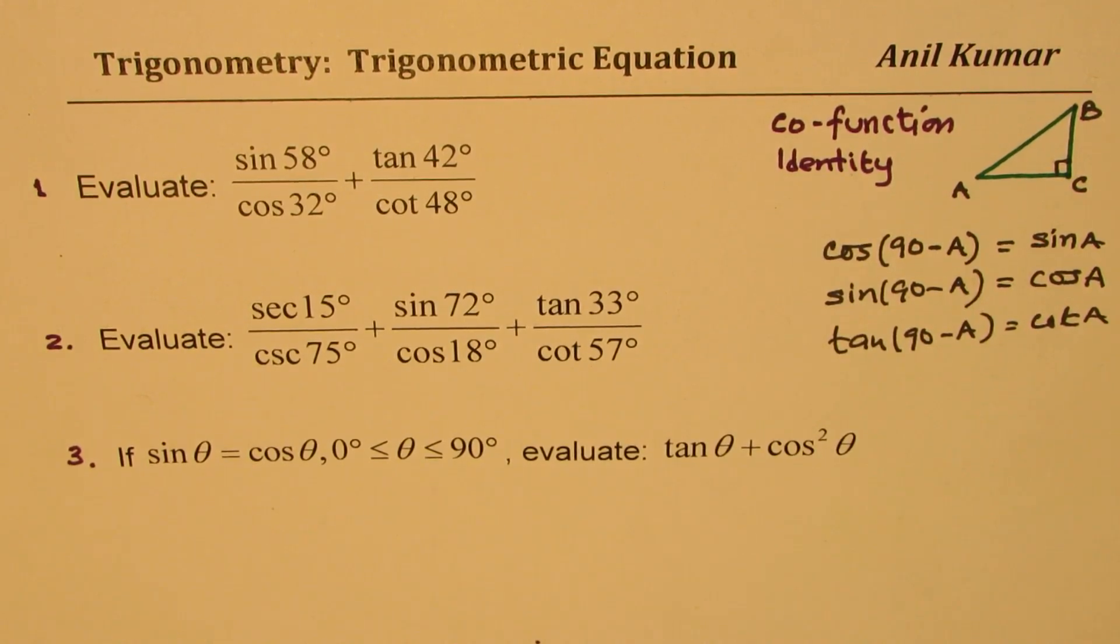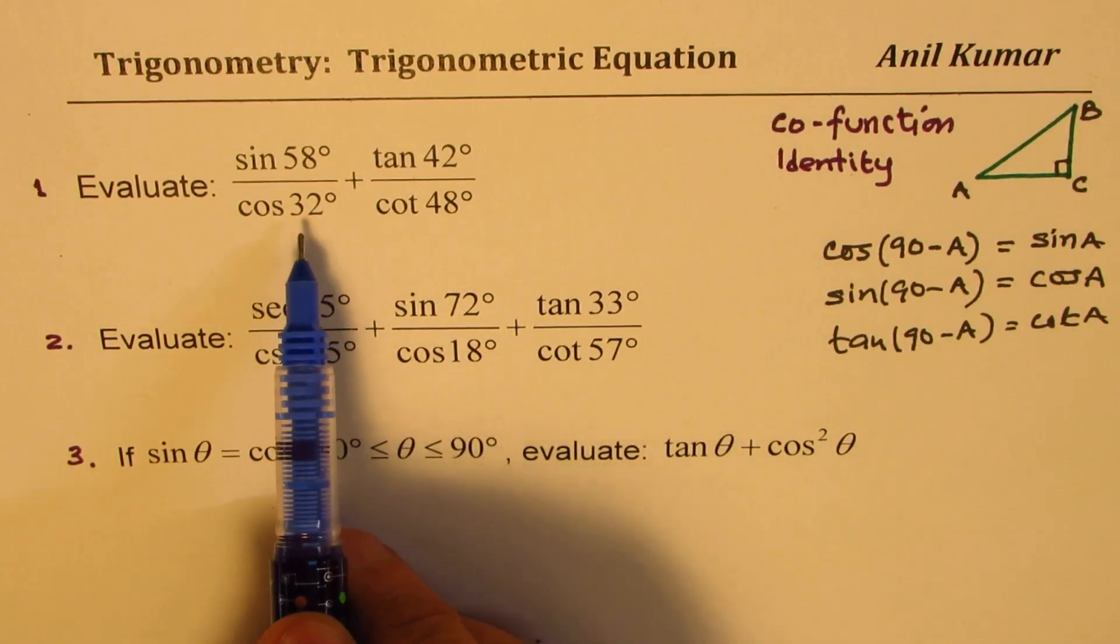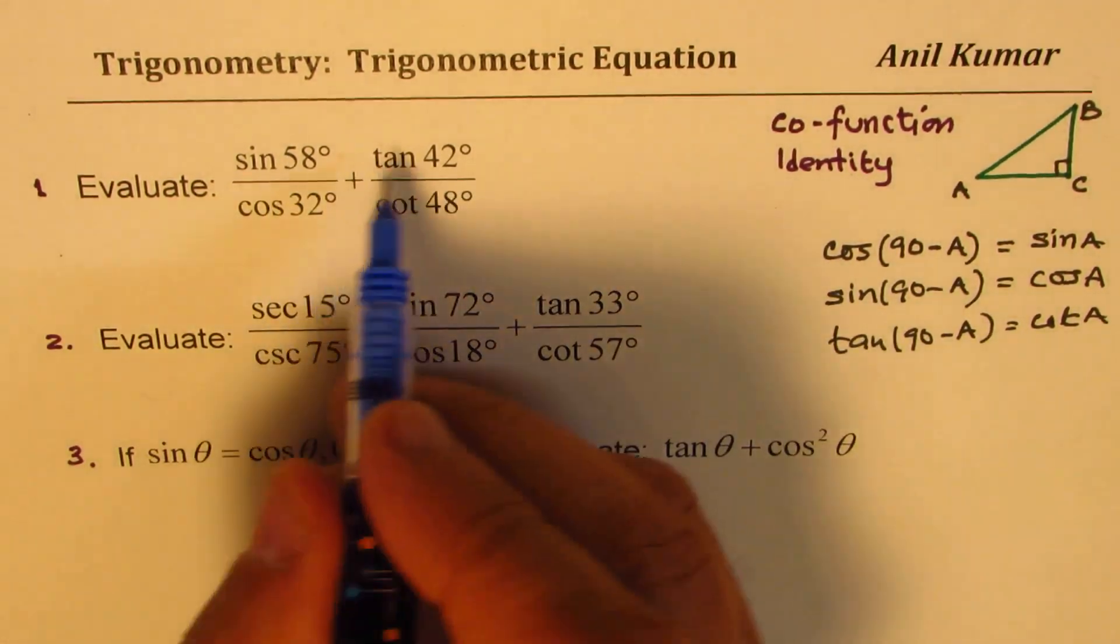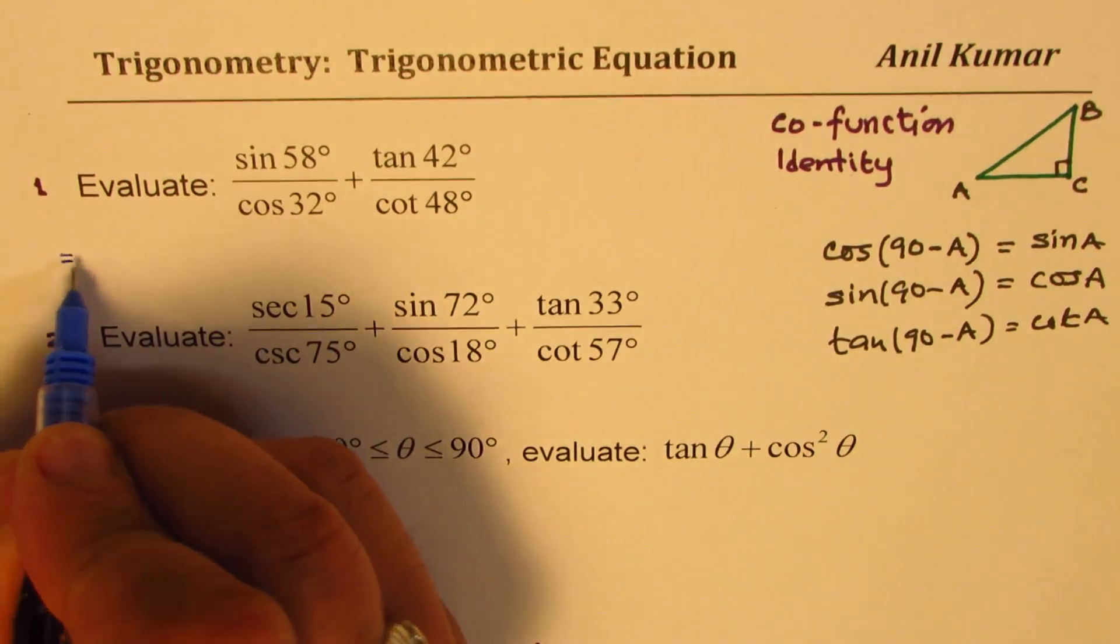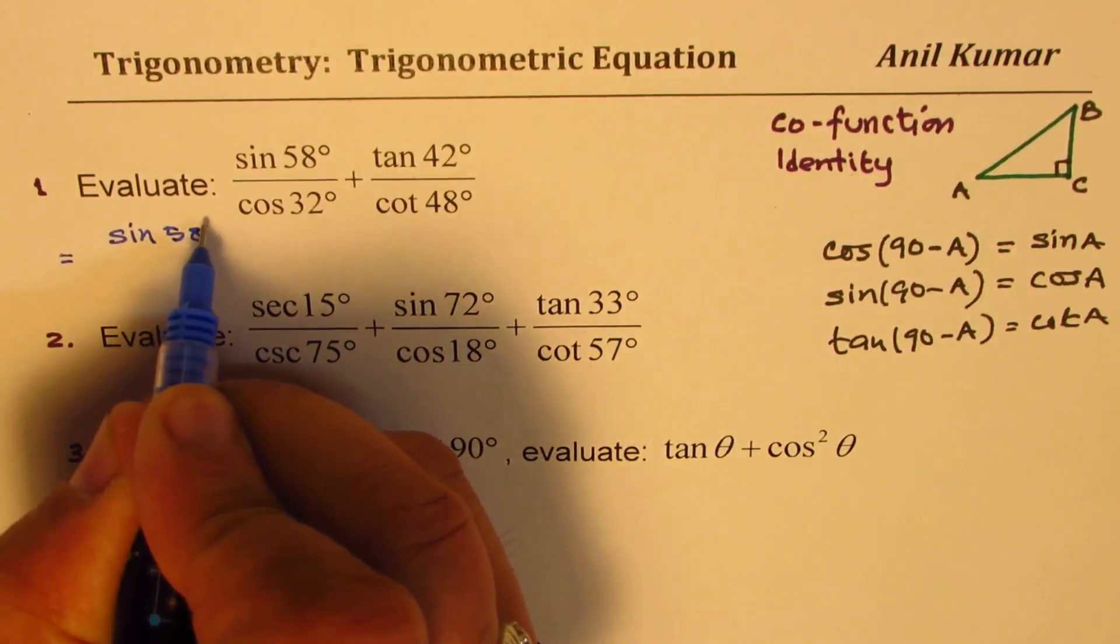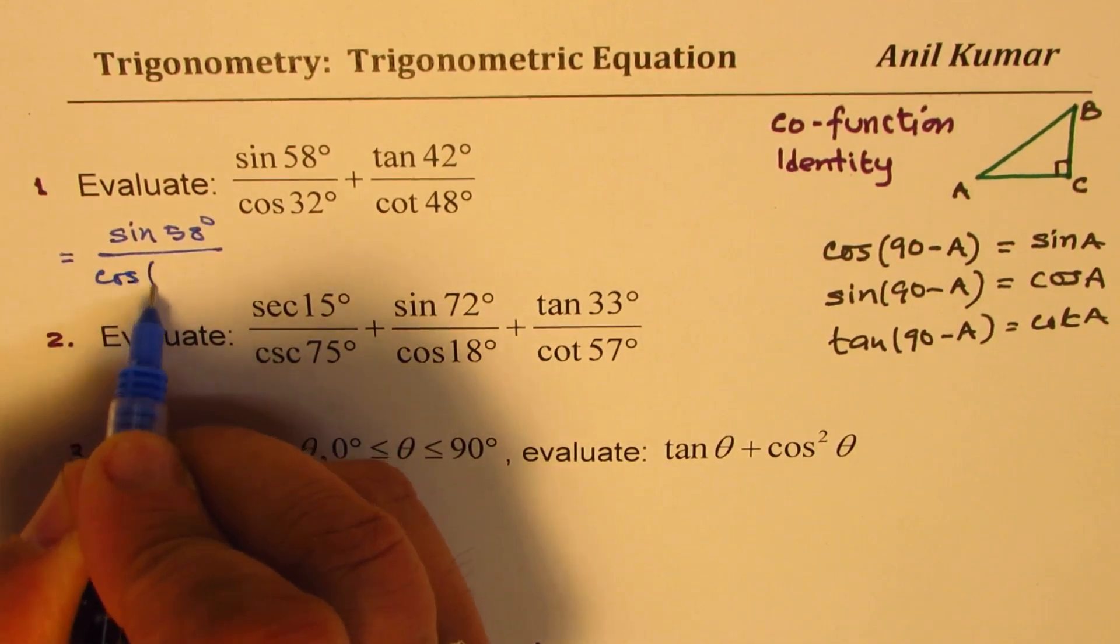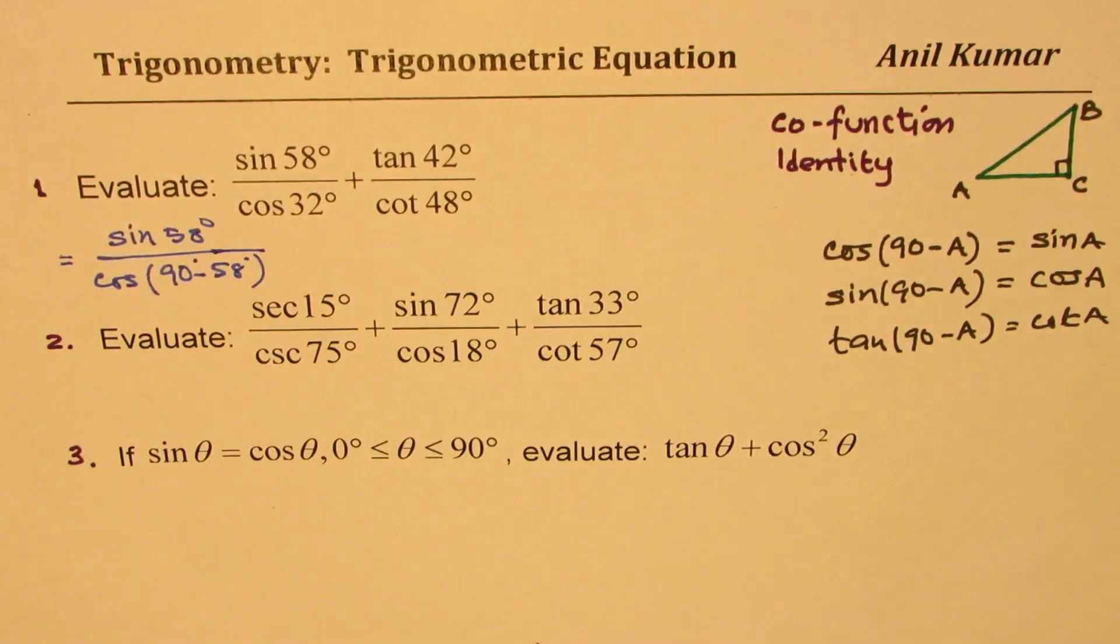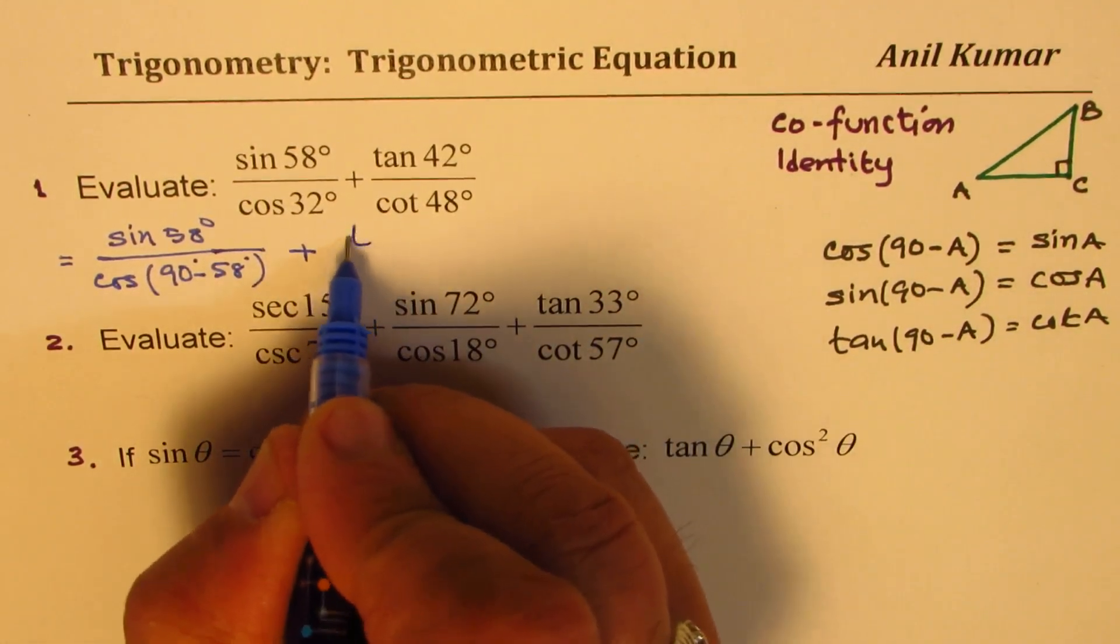The very first one here is sine 58 by cos 32. You see 32 is 90 minus 58. So we could write this as equal to sine of 58 degrees over cos of 90 minus 58. Do you understand? 90 minus 58 is 32. So in such questions, that is the identity to be used.